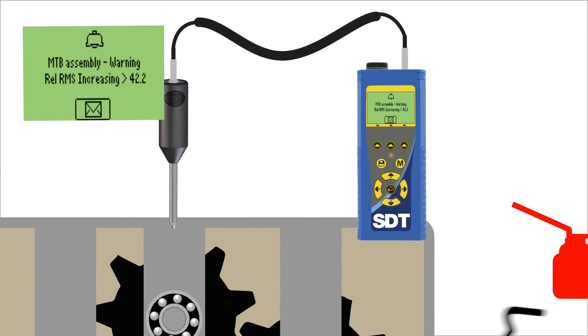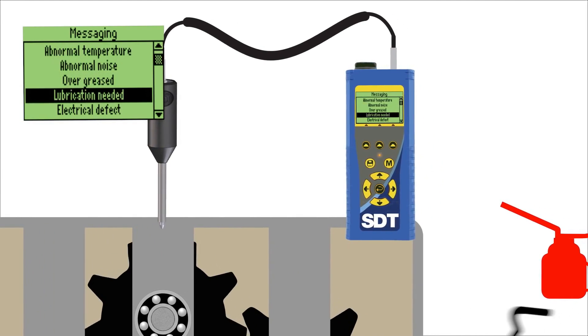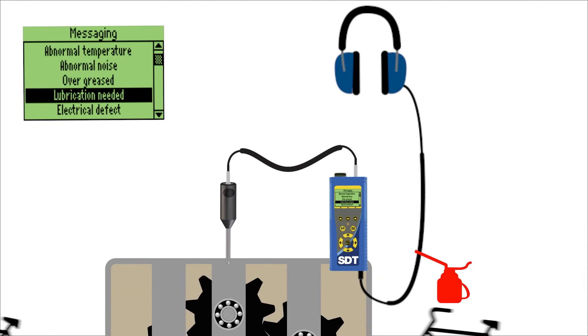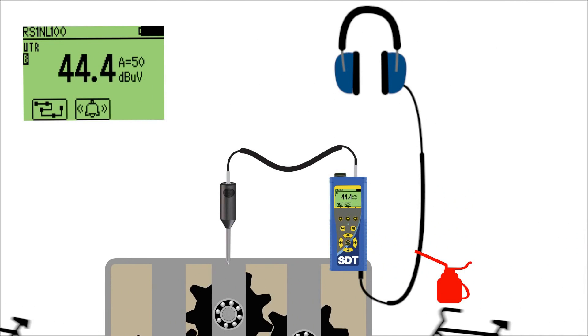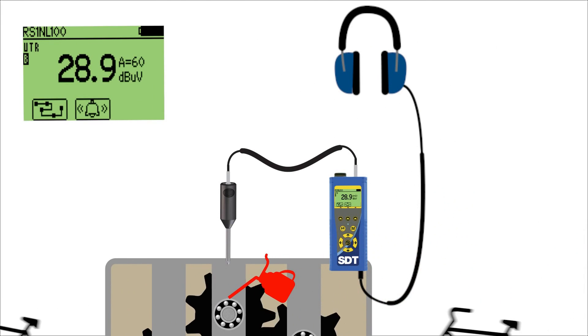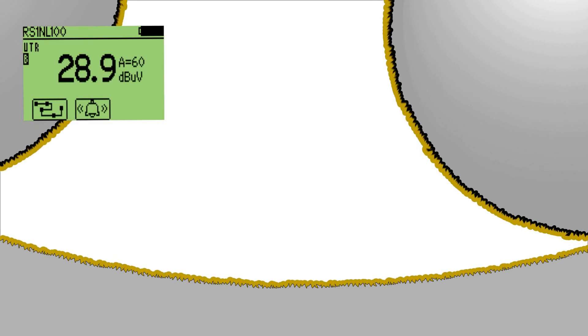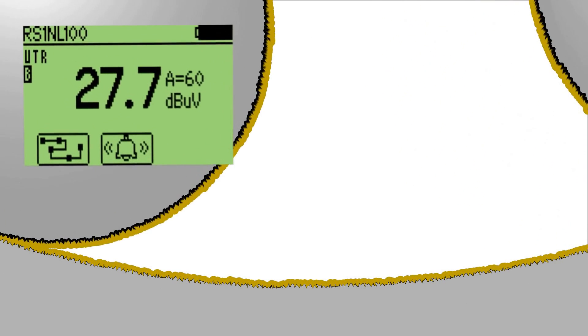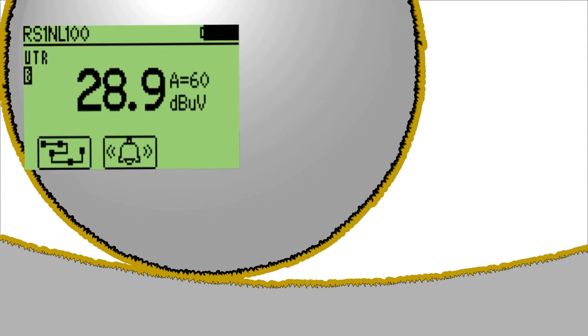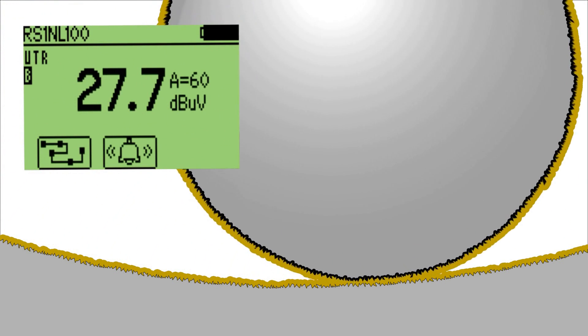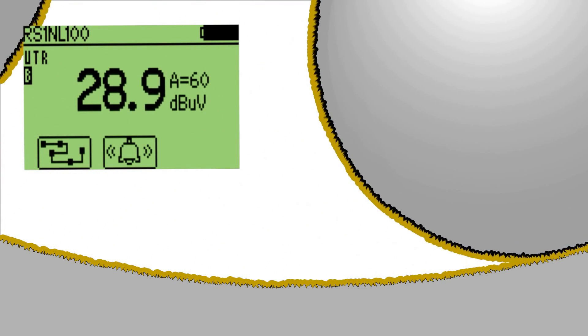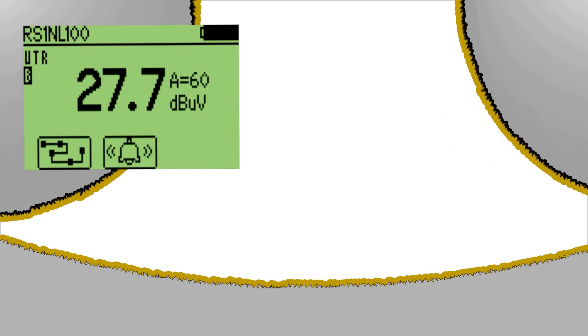In addition to alarming when friction levels need attention, lube techs listen to the bearing as new grease is applied. Using the SDT270's digital decibel metering as a guide, only enough grease is applied to return the bearing's friction level to normal.